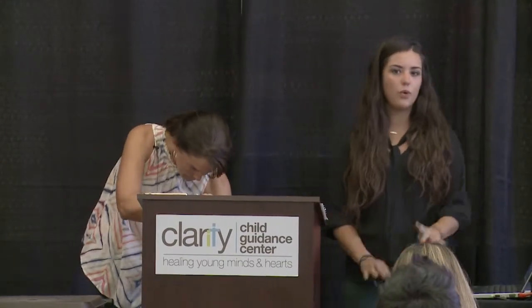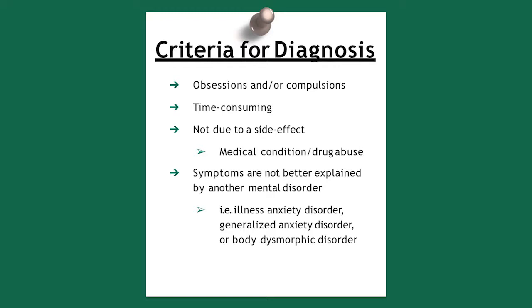The DSM-5 has four main criteria for diagnosing OCD. First, obsessions and compulsions are present — it can be 50-50, or more obsessions or more compulsions; either way, they're present. Second, it has to be time-consuming, taking over an hour of your day doing rituals or thinking about them. Third, it's not due to a side effect, medical condition, or drug abuse. Fourth, symptoms are not better explained by another disorder, since anxiety, major depressive disorder, and similar conditions can look like OCD.